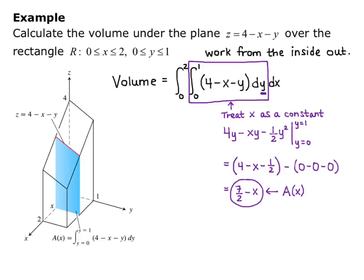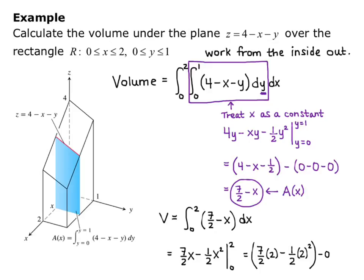Now to find the total volume, I take the integral of that area with respect to x. So the volume equals the integral from 0 to 2 of (7/2 − x) dx, which gives 7/2 · x − ½x², evaluated from 0 to 2. I get 7/2 times 2 minus ½ times 4, minus 0, which tells me the volume is 5 cubic units.